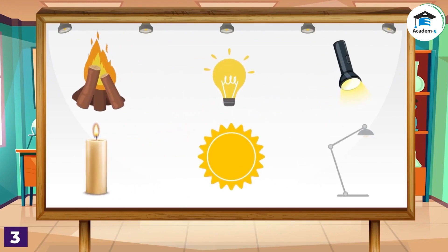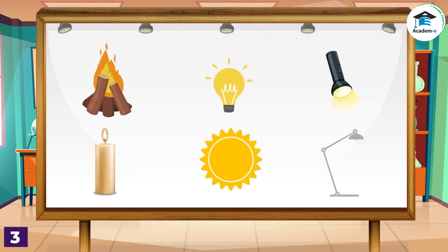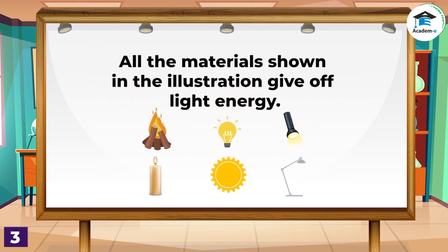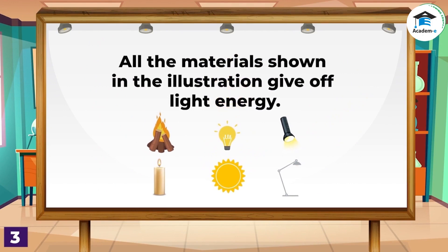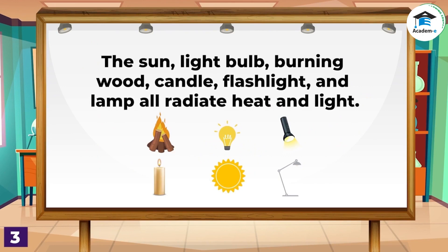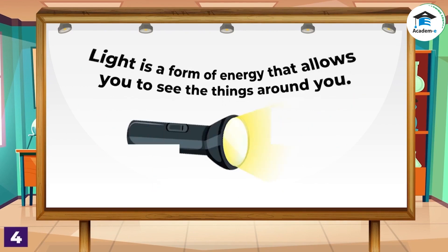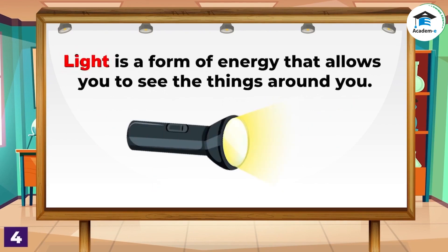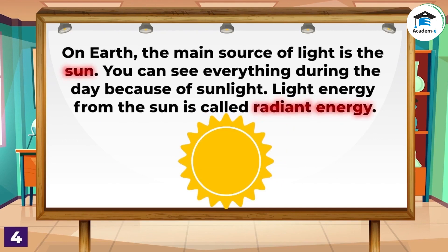What is common among all the materials shown in the pictures? All the materials shown in the illustration give off light energy. The sun, light bulb, burning wood, candle, flashlight, and lamp all radiate heat and light. Light is a form of energy that allows you to see the things around you. On earth, the main source of light is the sun — you can see everything during the day because of sunlight. Light energy from the sun is called radiant energy.